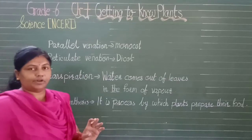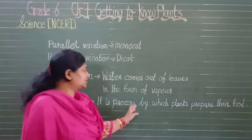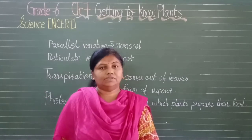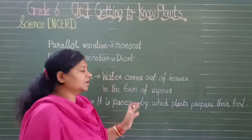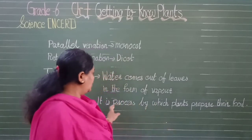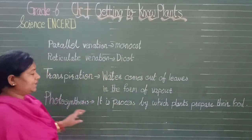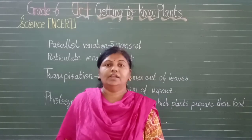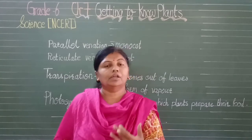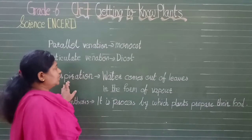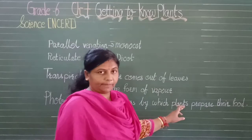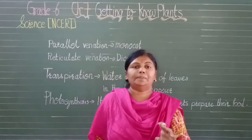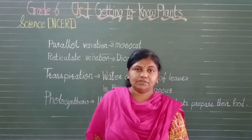Photosynthesis is the process by which plants prepare their food. It requires sunlight and a green substance called chlorophyll. In the presence of sunlight and chlorophyll, leaves prepare food — that is why leaves are known as the kitchen of the plant.